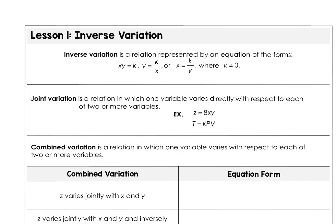In Lesson 1 for Unit 8, we're going to look at inverse variation. Inverse variation is a relation represented by an equation of the following forms: xy equals some constant of variation k, or y equals k divided by x, or x equals k divided by y. The constant k cannot be zero.